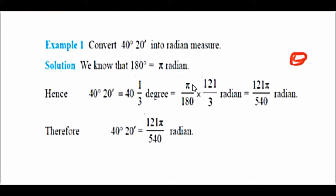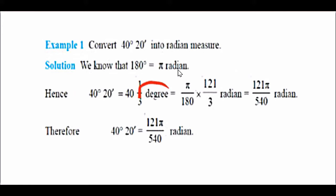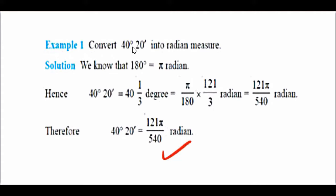We divide by 60 because 60 minutes make one degree. So 20/60 = 1/3. That gives us 40 and 1/3 degrees, which is 121/3 degrees. Now to convert this into radians, multiply by π/180. That gives us 121π/540. This is the radian conversion of 40°20'.